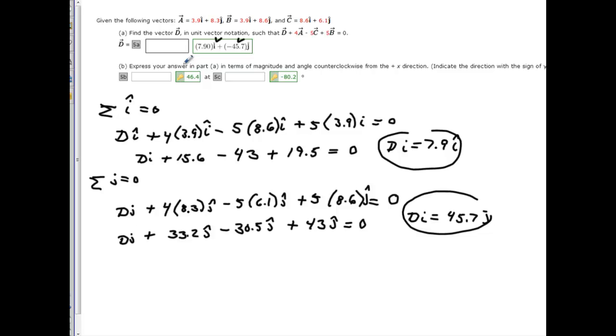Now, it says express your answer in terms of magnitude. Well, the magnitude is pretty easy, right? All you have to do is take, using Pythagorean Theorem. Let's just do 7.9 squared plus 45.7 squared. I'm going to make that negative, too, because that was negative to start out with. And then, I just dropped the negative squared. And when you get that, you should get 46.4.